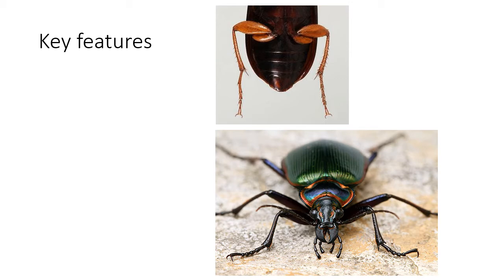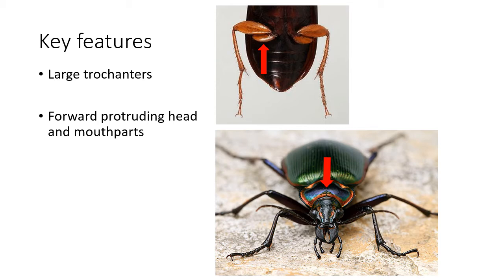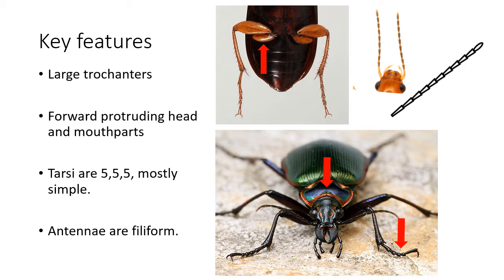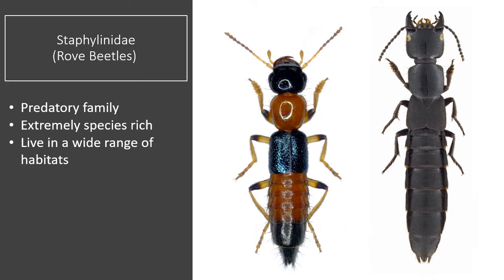Some of the key features we can use to identify carabid beetles include the large trochanters on the hind legs, the forward protruding head and mouth parts, and the tarsal formula is 5-5-5 and they are mostly simple. Finally, the antennae are filiform.